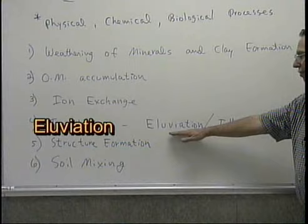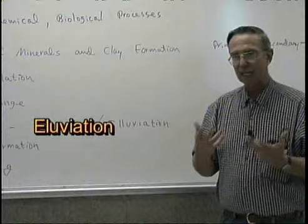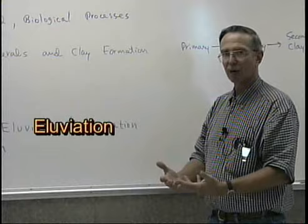Two terms associated with this movement are elluviation, spelled EL, and illuviation, beginning with the letters IL. Elluviation is where we are leaching or moving materials from an upper region of the soil profile down to a greater depth.